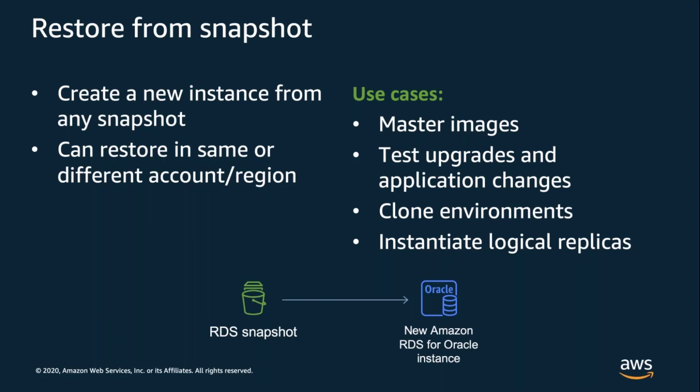Snapshots can be copied to other regions or accounts and can be encrypted or re-encrypted with different Amazon KMS keys. Restores in RDS always create a new instance — you can restore any snapshot and specify things like instance class, storage type, and parameter and option groups. RDS creates fresh EBS volumes based on the snapshot, provisions an EC2 compute node, starts the database, and makes it available. Snapshots make it easy to clone environments and test things like Oracle upgrades and application changes. You can even write simple shell scripts to restore a snapshot, run RMAN data file validation, then delete the instance if no problems were found.